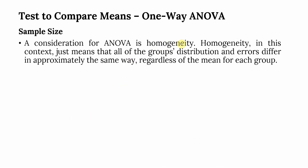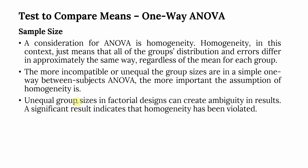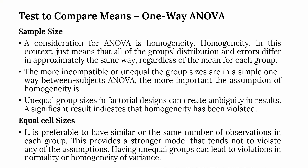A consideration for ANOVA is homogeneity, which means that all groups' distributions and errors differ in approximately the same way, regardless of the mean of each group. The more incompatible or unequal the group sizes are in a simple one-way ANOVA, the more important the assumption of homogeneity becomes. Unequal group sizes in factorial designs can create ambiguity in results. Equal cell size is preferable — having similar or the same number of observations in each group provides a stronger model and tends not to violate the assumptions.